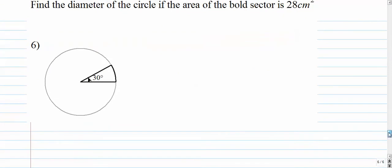Last one. Find the diameter of a circle if the area is 28 centimeters squared. So we don't know the radius. Once we find the radius, we want to find the diameter, which is 2 times the radius. So we set up our proportion. The area is already given. The radius, we don't know. 30 degrees is the angle. 360 is your denominator.